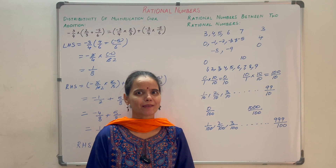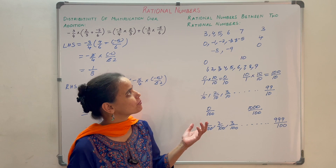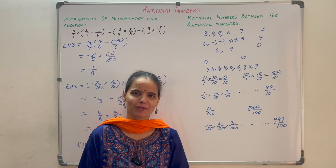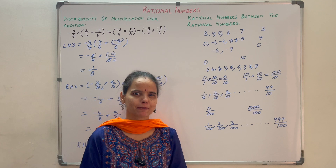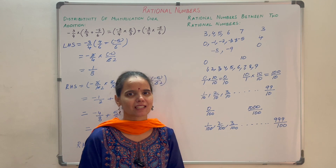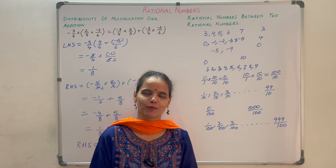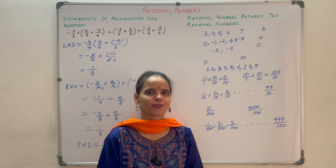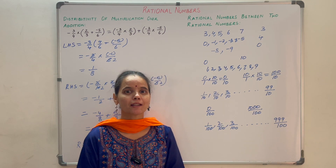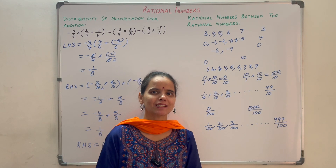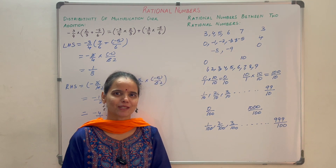There is one more concept to explain how many rational numbers exist between two given rational numbers, which I have explained in the Class 9 Number System video — the link is given in the description box below. Interested students can check it out there, where you will also find that between two given rational numbers there are infinite rational numbers.